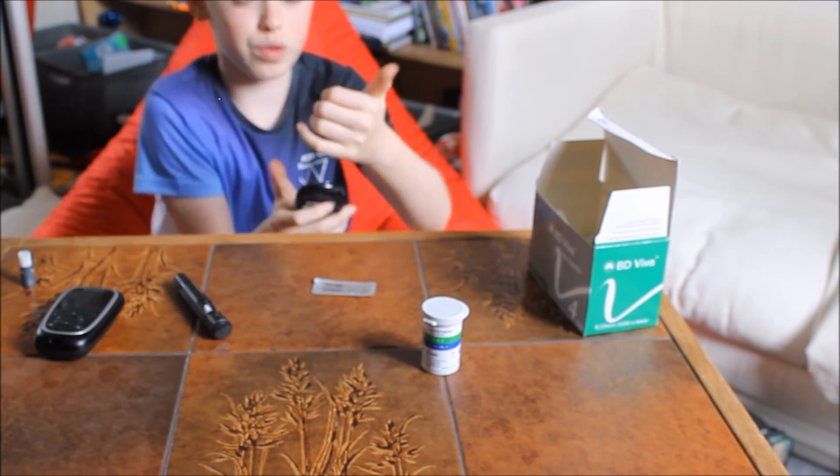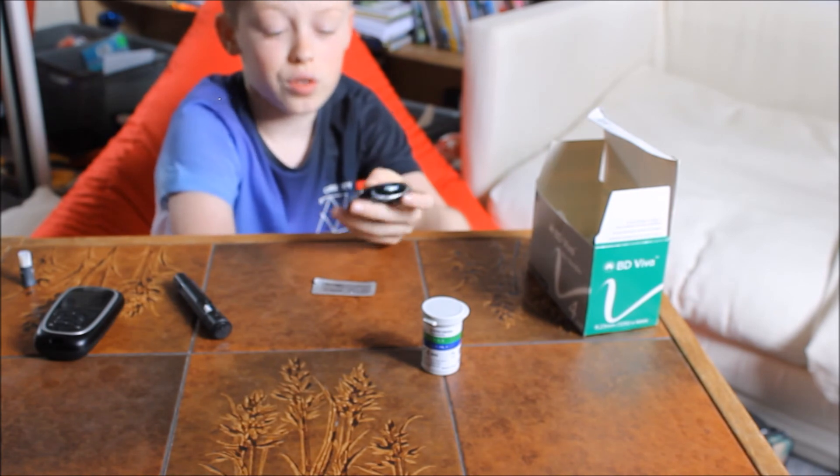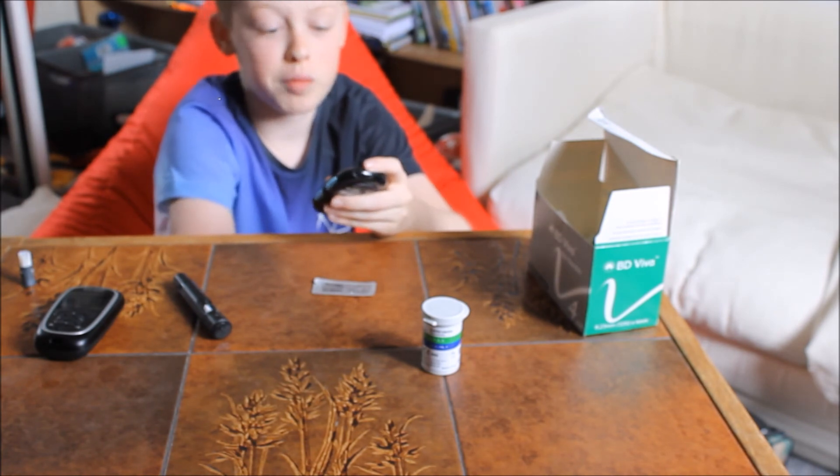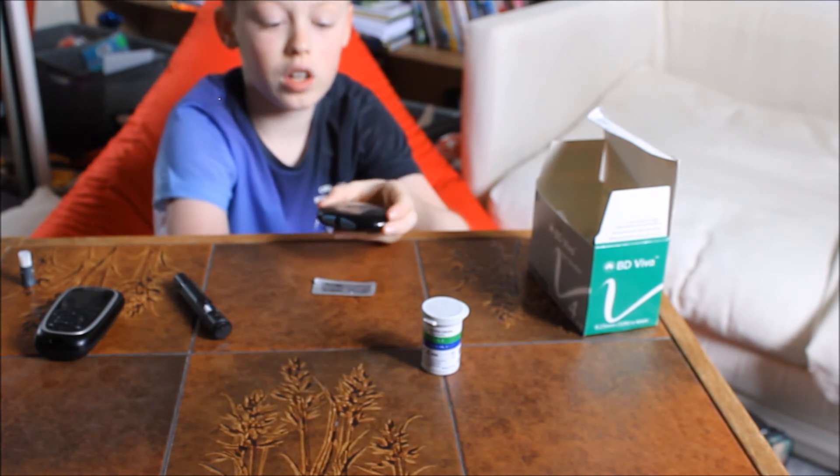You would just put it in here, and like normal blood, you would just prick your finger and put it on there, and it'll tell you how many ketones you are. So the range to sort of be in is 0.6 to 0.